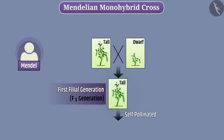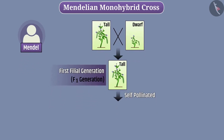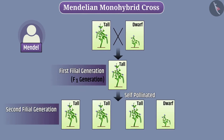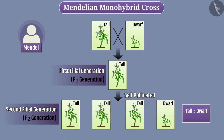He self-pollinated the F1 generation plants and grew the second generation, that is F2 generation plants. All the plants in F1 generation were tall, but in F2 generation, the ratio of tall plants to dwarf plants was 3 is to 1. No plant was of intermediate height, that is, height in between the two.